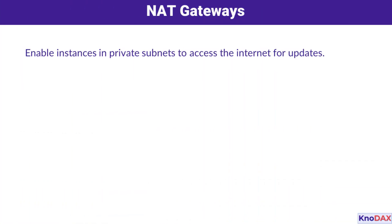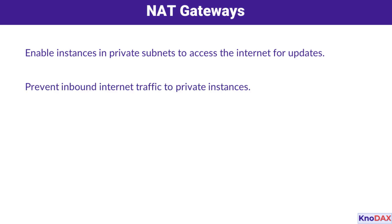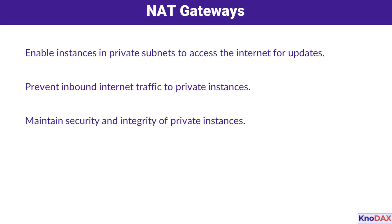NAT gateways, or network address translation gateways, allow instances in private subnets to access the internet for updates and patches. However, they prevent inbound traffic from the internet, ensuring that private instances remain secure. By placing a NAT gateway in a public subnet, you maintain outbound connectivity for private resources while keeping them shielded from external threats.